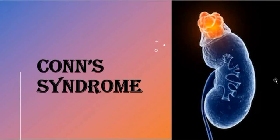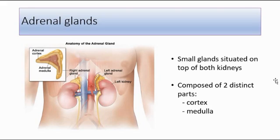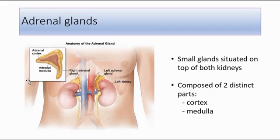In this video, I'll be talking about Conn's syndrome. I will first go through the brief anatomy of the adrenal glands. Adrenal glands are small glands situated on top of both the left and right kidneys. As we can see in this picture, there is the left adrenal gland and the right adrenal gland. The adrenal gland is composed of two parts: the outer adrenal cortex and the inner adrenal medulla. Since I'll be talking about Conn's syndrome, I'll focus on the adrenal cortex, which is the outer layer.